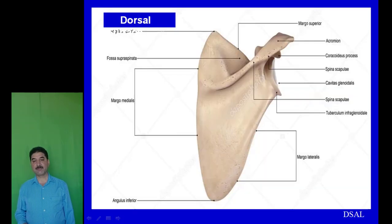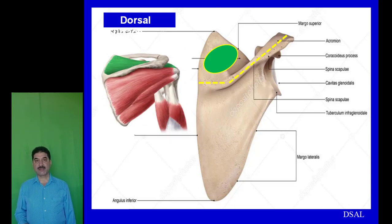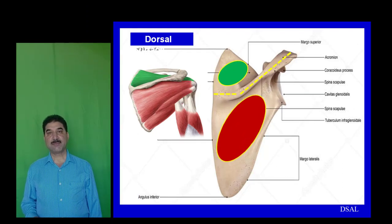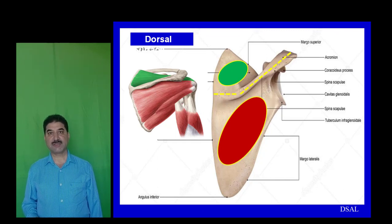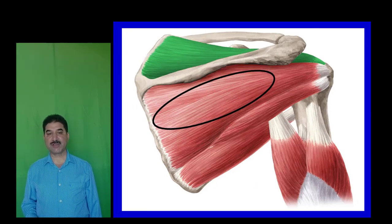The dorsal surface of the scapula is divided by the spine into two fossae. The supraspinous fossa lies above the spine, and supraspinatus muscle is attached in this fossa. The infraspinous fossa lies below the spine, and infraspinatus muscle arises from this fossa.